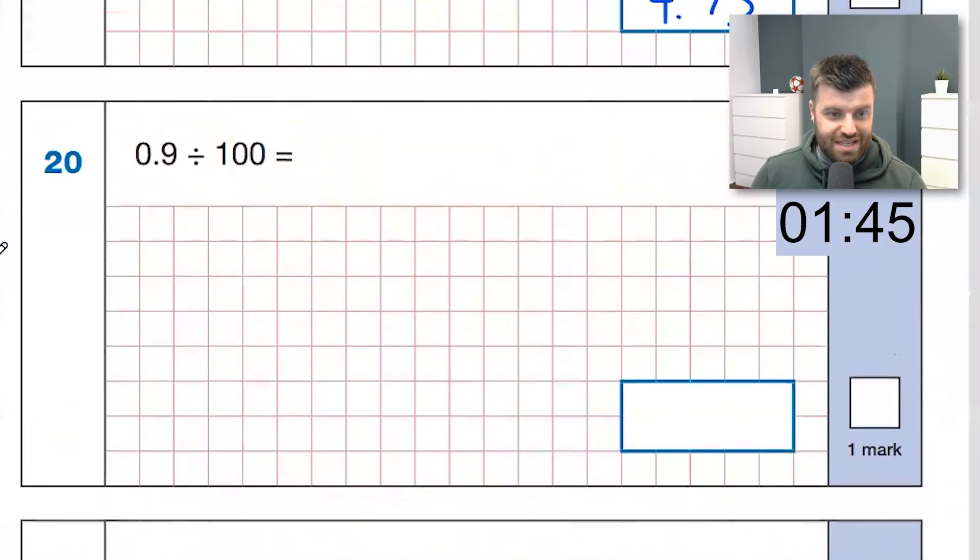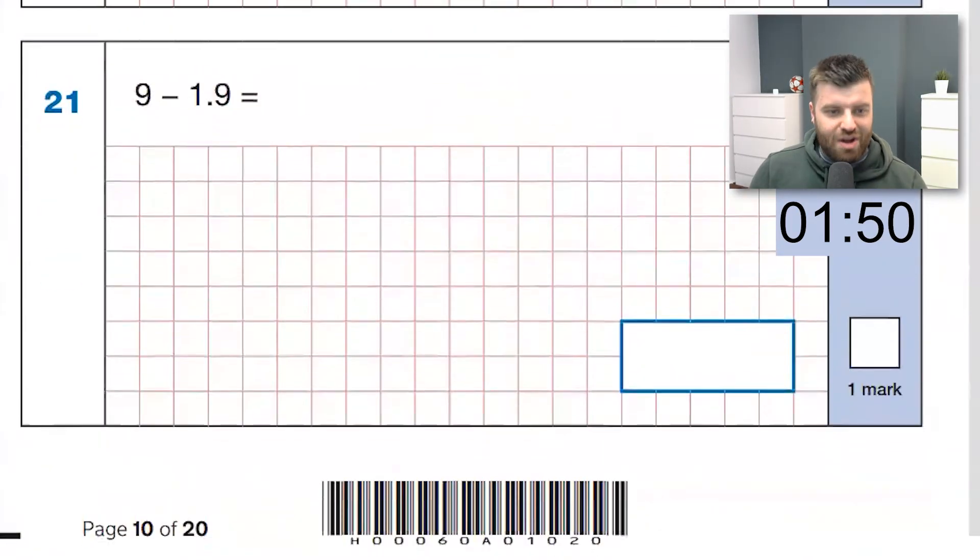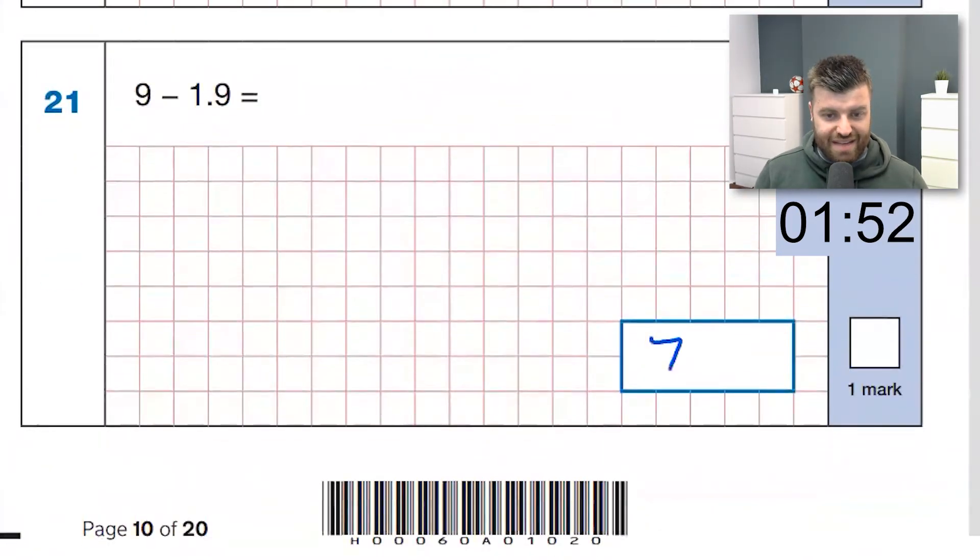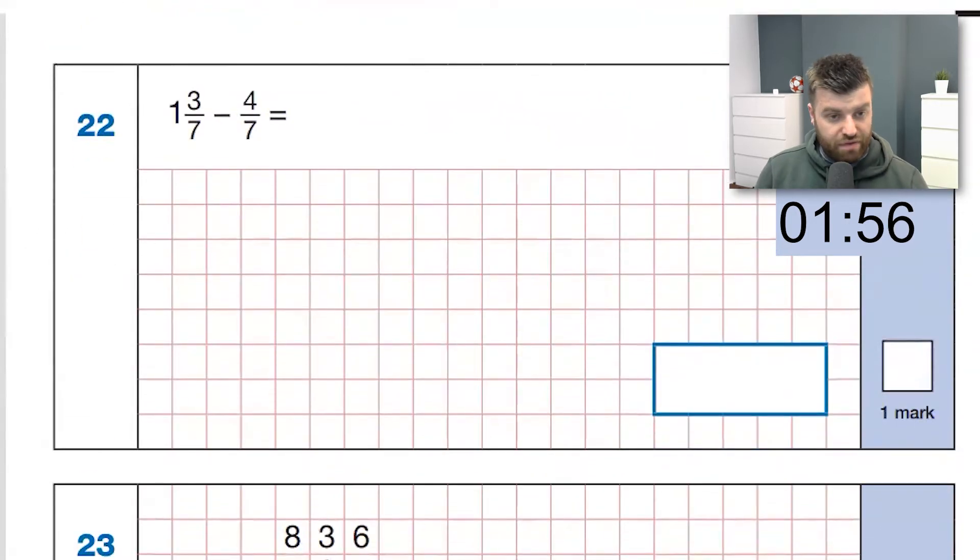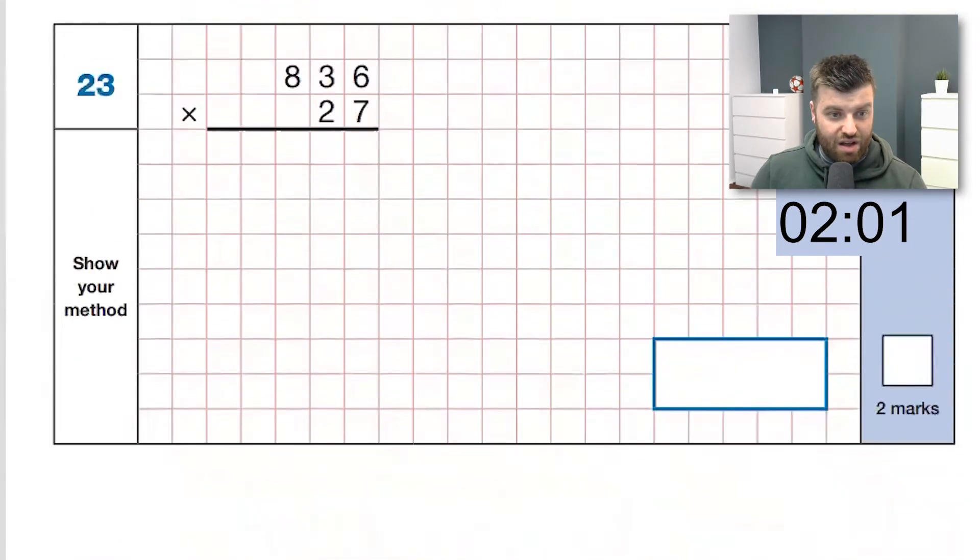Nice. Question 20 divided by 100. Just shift those digits down. 0.009. Question 21, nine take away 1.9 is going to be 7.1 to make the whole. One and three sevenths take away four sevenths. Well, that's going to be one seventh left than one. That's six sevenths as our answer.